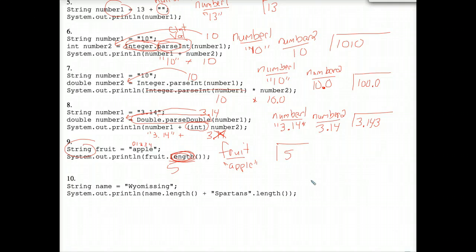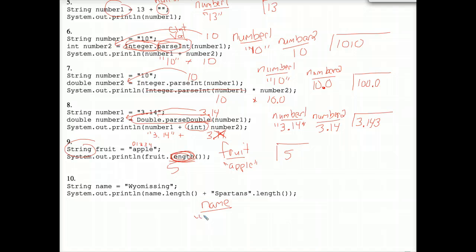And now, finally, number 10. Name is equal to Wyoming with a capital W, just to be accurate here. And we are printing out the length of name. Let's count, 1, 2, 3, 4, 5, 6, 7, 8, 9, 10. So that's a 10, plus Spartans dot length.